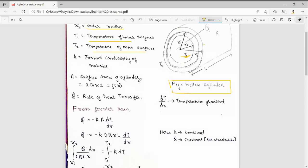Here we should take the surface area only because the heat is flowing through the surface, not through the cross-sectional area. That is why we should not take the cross-sectional area. We should take the surface area of the cylinder, that is, the area which is perpendicular to the direction of heat flow.